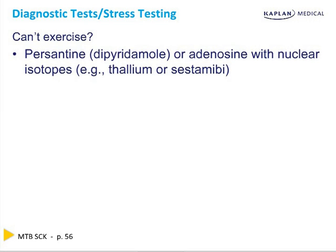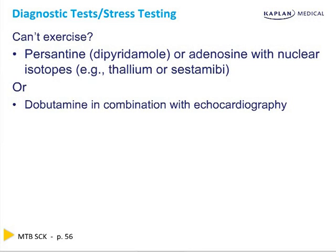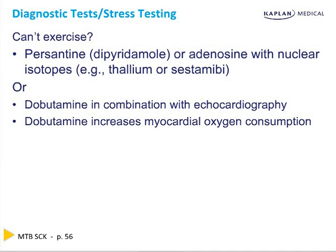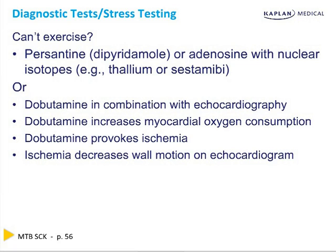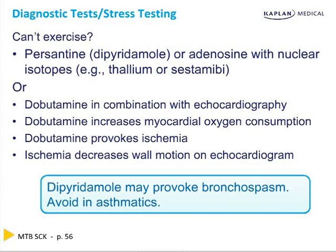If a patient can't exercise and achieve sufficient heart rate, we use chemicals to simulate the effect of exercise. Persantine or dipyridamole will increase perfusion and flow to the heart in a normal person; if it doesn't increase, it's ischemic. You should then see increased pickup of nuclear isotopes such as thallium or sestamibi. Alternatively, dobutamine is used in combination with echo. Dobutamine simulates exercise by increasing oxygen consumption and should provoke ischemia. Decreased wall motion with dobutamine that is reversible means ischemia; if irreversible, it's infarcted.